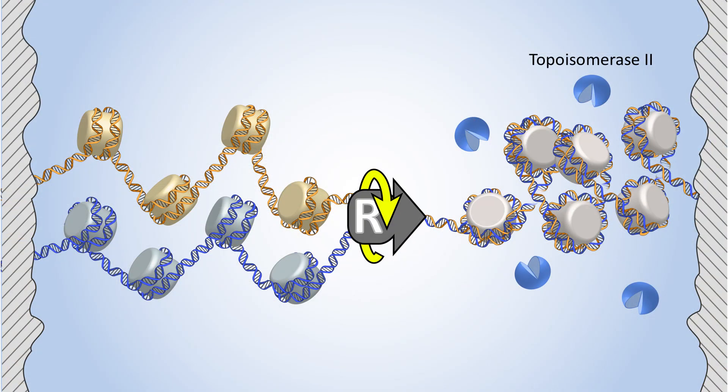In the cell, topoisomerases help to untangle DNA molecules. We found that while the actual twist primarily goes to the single chromatin fiber in front of the replication machinery, the single chromatin fiber is also a preferred substrate for topoisomerase action. Thus, chromatin mechanics and topoisomerase activity coordinate in a synergistic fashion to minimize daughter-strand intertwining.